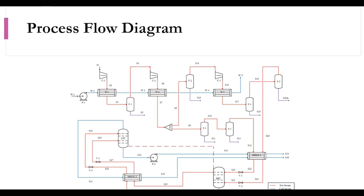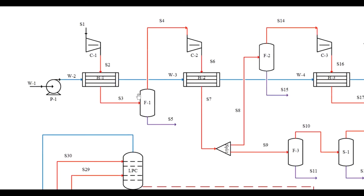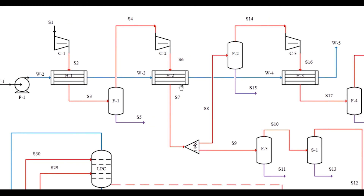Looking at the overall process schematic: stream S1 goes to compressor C1, then to heat exchanger H1, then to flash separator F1 — this is one compression stage. Cooling water from the cooling tower is pumped and supplied to this heat exchanger. Pressure is increased; with the increase in pressure, temperature increases, which is then reduced using the heat exchanger. The produced condensate is separated in F1 because air is humid in nature.